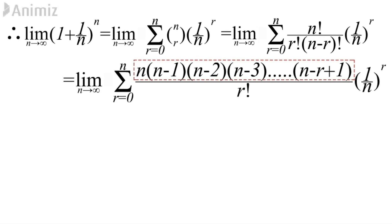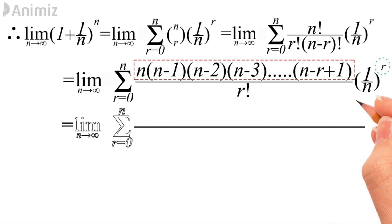Looking at the numerator inside the sum, that term is a multiplication of r individual terms: n, then n-1, then n-2, and so on. We also have (1/n)^r, so we can take each 1/n and multiply it with the corresponding term sitting above the fraction in the sum, giving us the next step where the limit and sum stay the same.